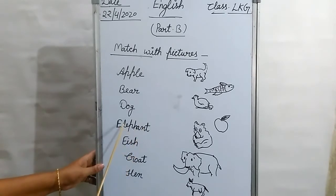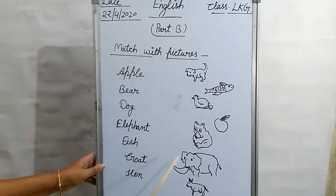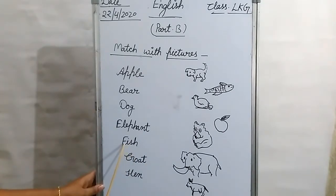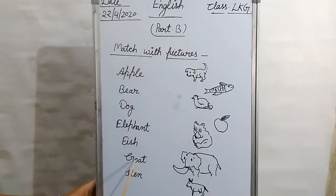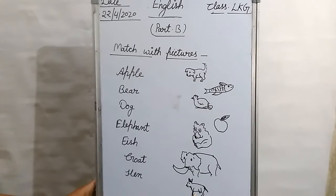Now, elephant — E, L, E, P, H, A, N, T. Elephant. Where is the elephant? Here. So match this spelling with elephant. Now, F, I, S, H — fish. Where is the fish? Here. So you have to match this fish here. Now, goat — G, O, A, T. Goat. Where is the goat? Here. You have to match this to this goat.